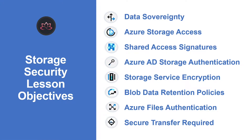We will start with understanding what is data sovereignty, what is Azure storage access, and how you can implement shared access signatures. Then we will learn about Azure AD storage authentication and storage service encryption. After that we will learn about blob data retention policies, how you can access Azure files, Azure files authentication, and what is secure transfer required.